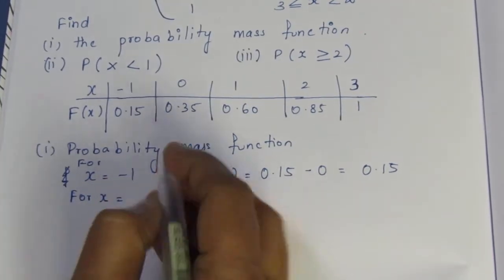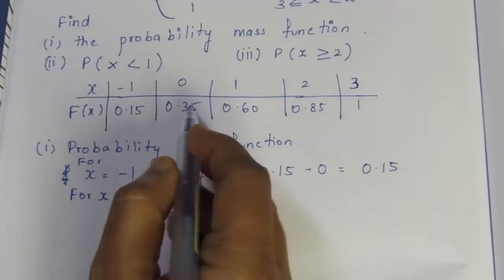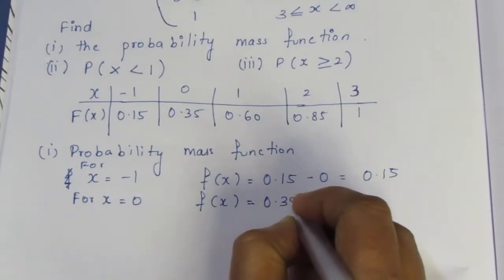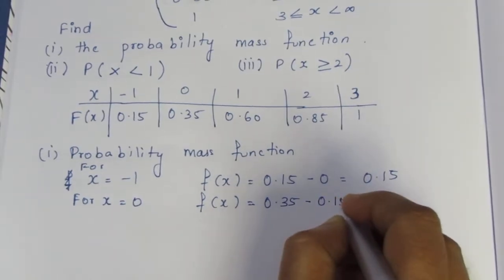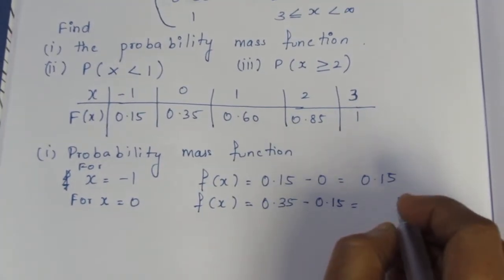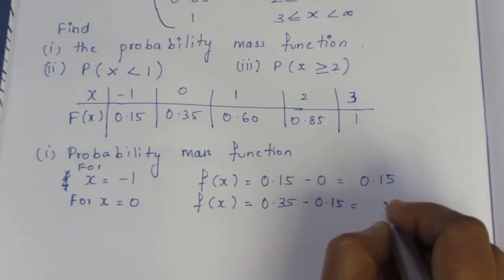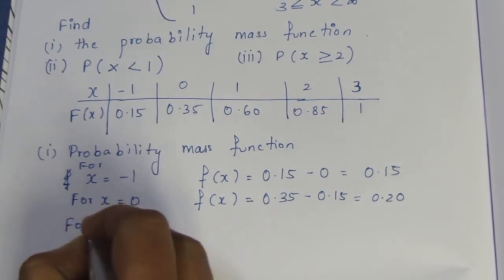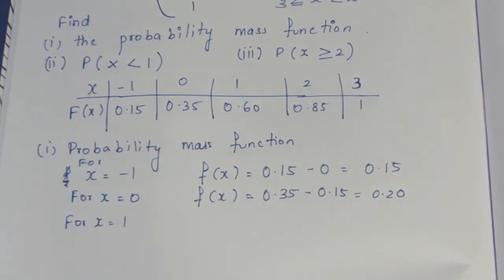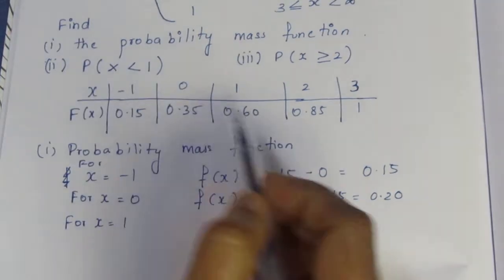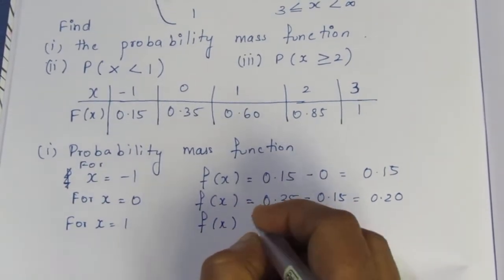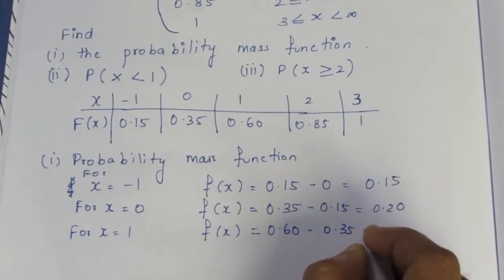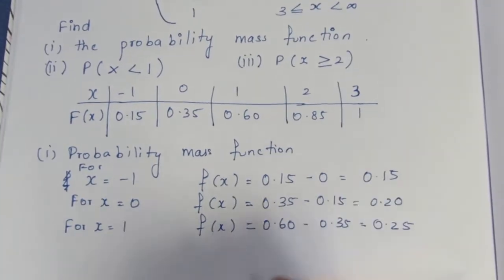Next, for x equal to 0: f(0) = F(0) minus F(-1) = 0.35 minus 0.15 = 0.20. Next, for x equal to 1: f(1) = F(1) minus F(0) = 0.60 minus 0.35 = 0.25.